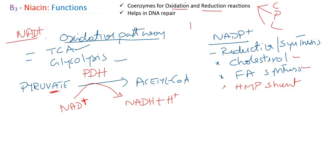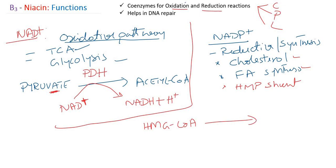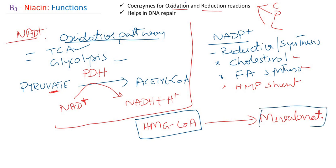To give one example of a reductive pathway reaction: in cholesterol synthesis, there is a reaction where HMG-CoA is converted to mevalonic acid or mevalonate. By a series of reactions, this mevalonate is ultimately converted to cholesterol.